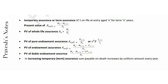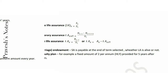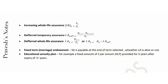In increasing temporary term assurance, the sum payable on death increases by a uniform amount every year. Increasing whole life assurance: iAx equals Rx divided by dx.